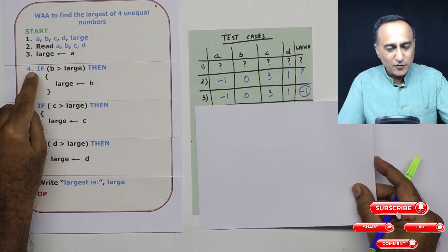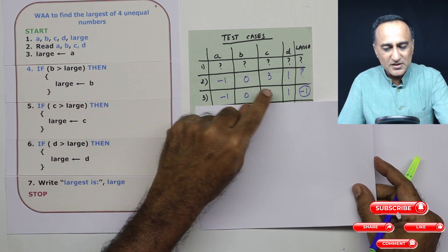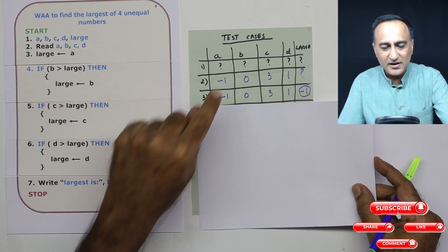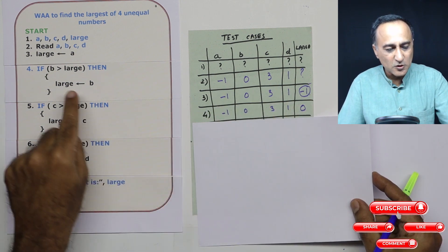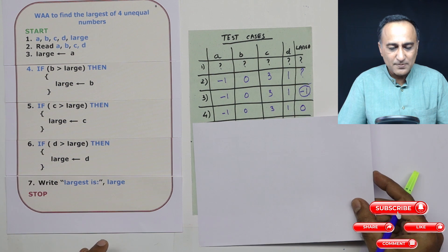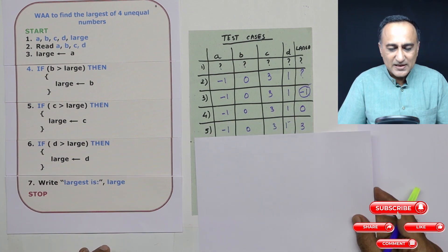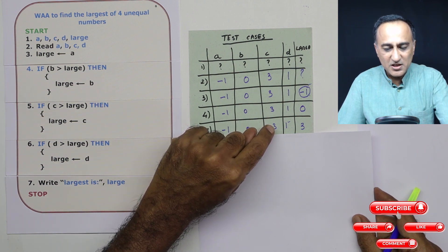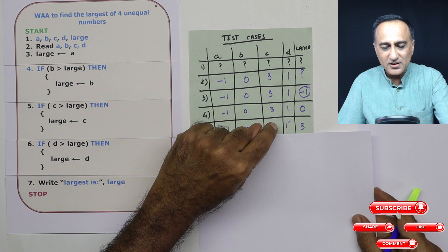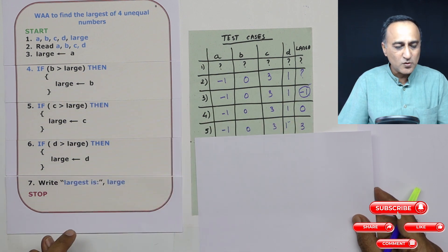Then in step number four, I'm checking if zero is greater than minus one. Definitely zero is bigger than minus one, so my new large will become zero. Then I come to step number five. I'm again comparing C, which is three, with zero. Definitely three is bigger than zero, so three becomes my new large.